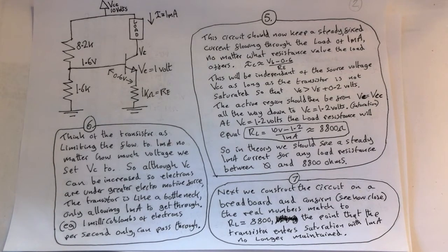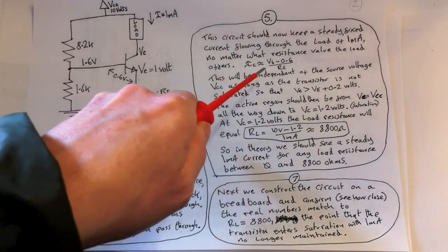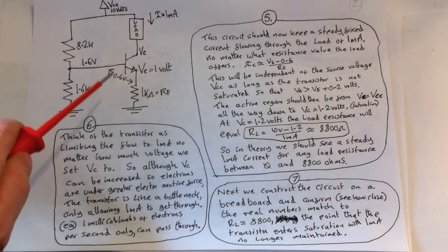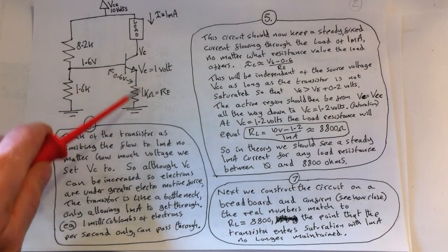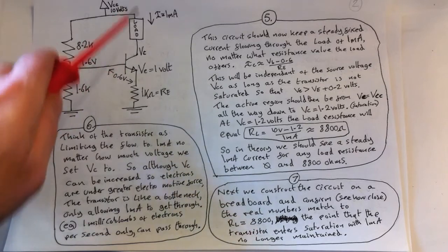This circuit should now keep a steady fixed current flowing through the load of 1 milliamp no matter what the resistance value the load offers. IC equals VB minus 0.6 over RE, so what we're saying is this part of the circuit defines the current.